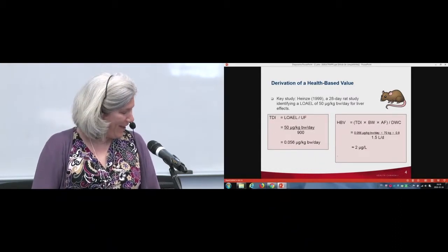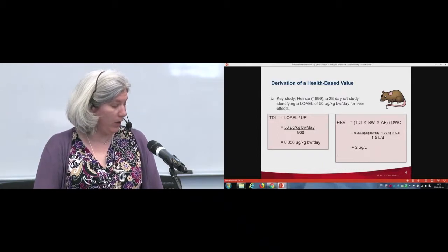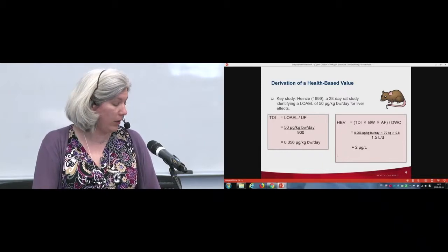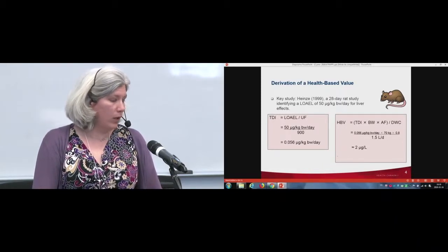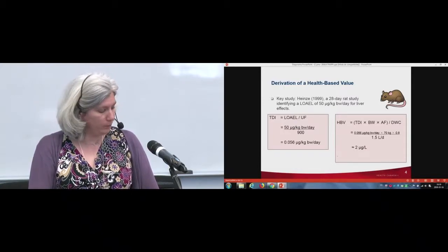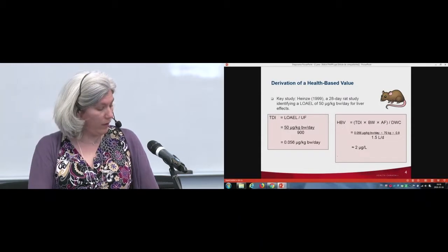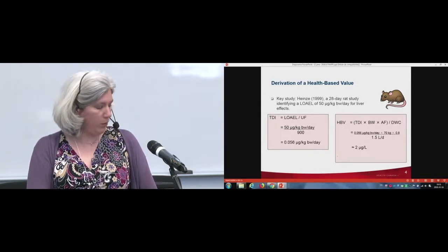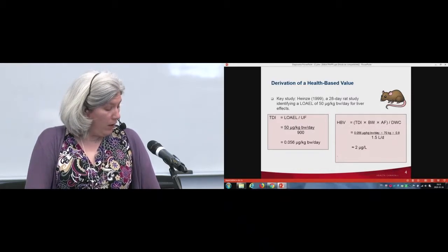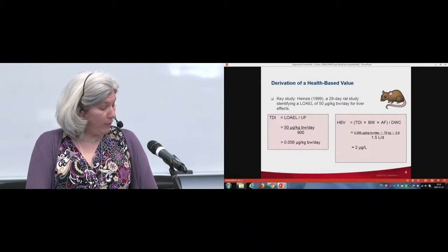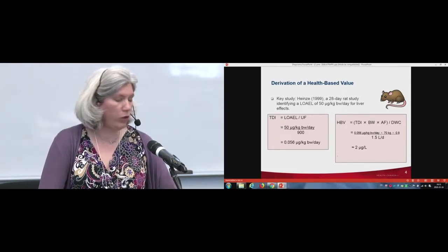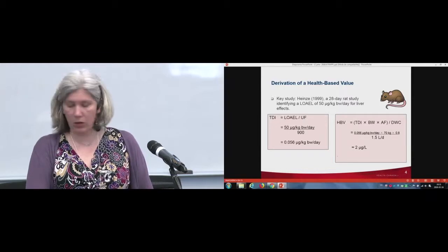70 kilos is the average body weight of a Canadian adult, which explains part of the difference between the Canadian number and the World Health Organization, which is at one microgram per litre — using global body weight statistics lowers that body weight. The allocation factor of 80% is a ceiling value allocation factor that Health Canada uses in these calculations. It indicates that the majority of the exposure to microcystins is expected to be through drinking water, with the remaining 20% allowing for other non-negligible exposures from other media such as food or recreational exposure. 1.5 litres per day is the average daily volume of drinking water consumed by a Canadian adult, used in the calculation of all chemical guidelines.